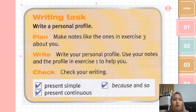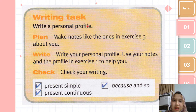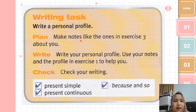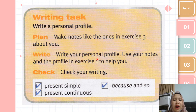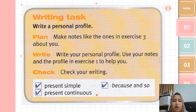The instruction in your textbook is: write a personal profile. So we are going to write this — a personal profile. We already read the example last class, the one about Claire Edwards. Now we are going to write about our own profile. Make notes like the ones in exercise 3. Then write our personal profile, check your writing, use present simple and present continuous, and also use 'because' and 'so'. Let's do it.